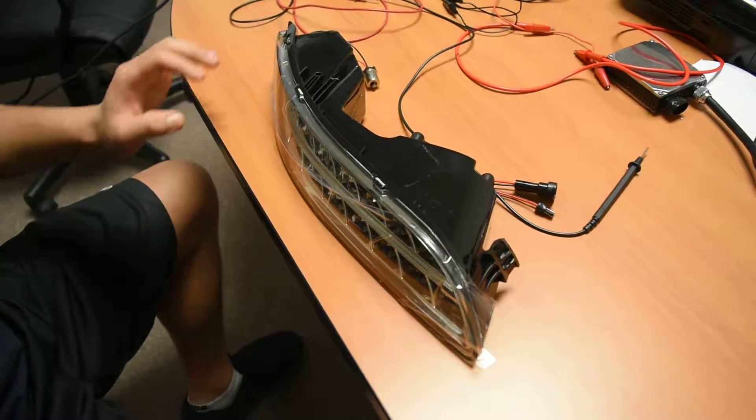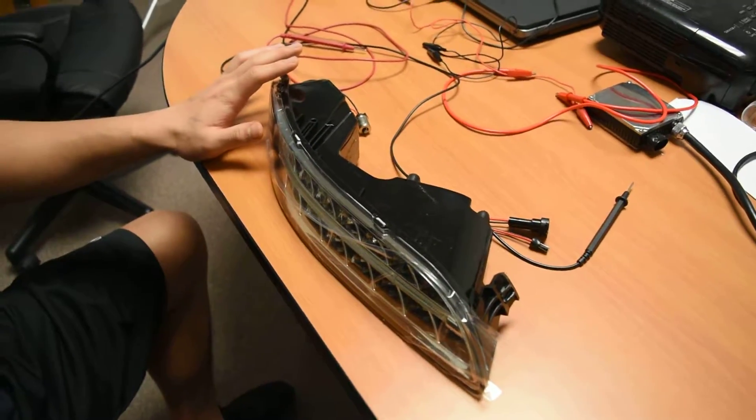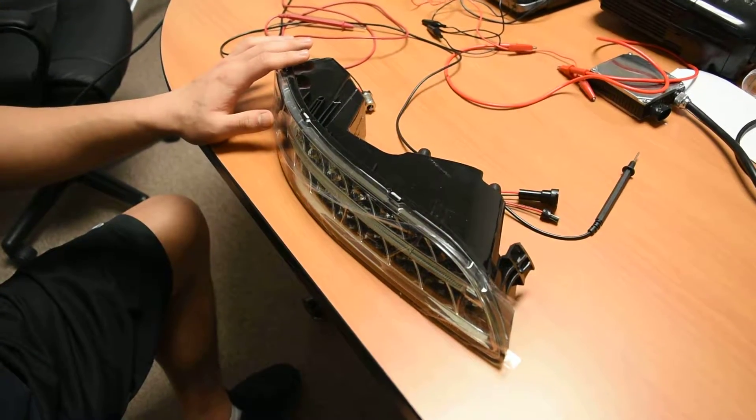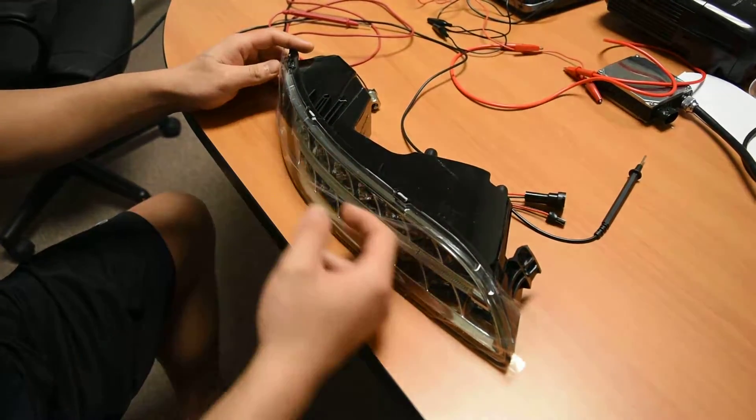Good afternoon. This video documentation is regarding the 997.1 LED fog lights. I understand that you might be having concerns with the signal lights not working.